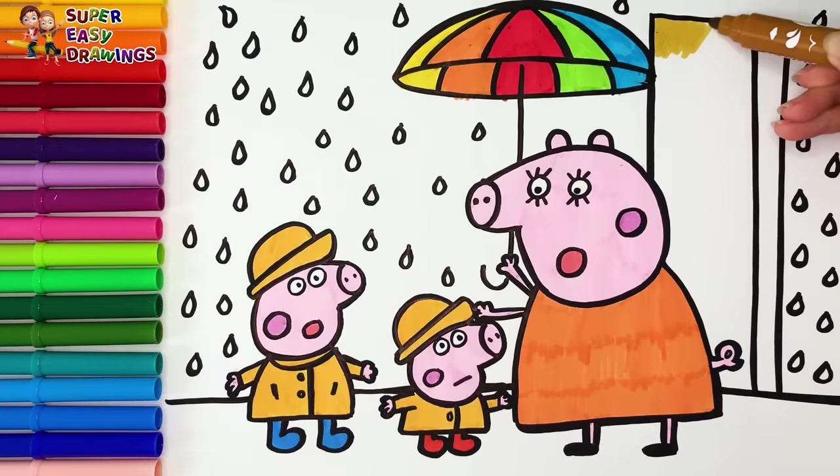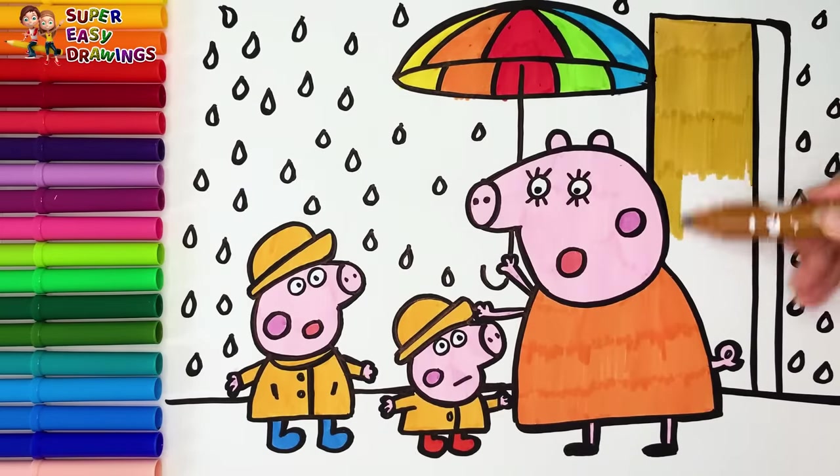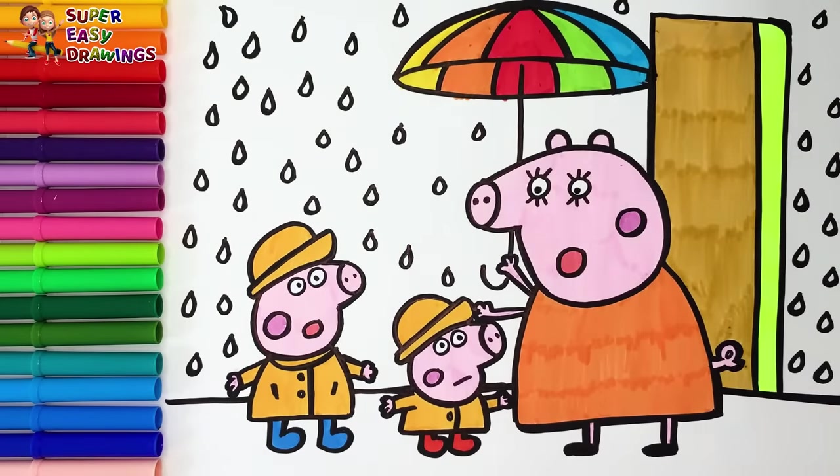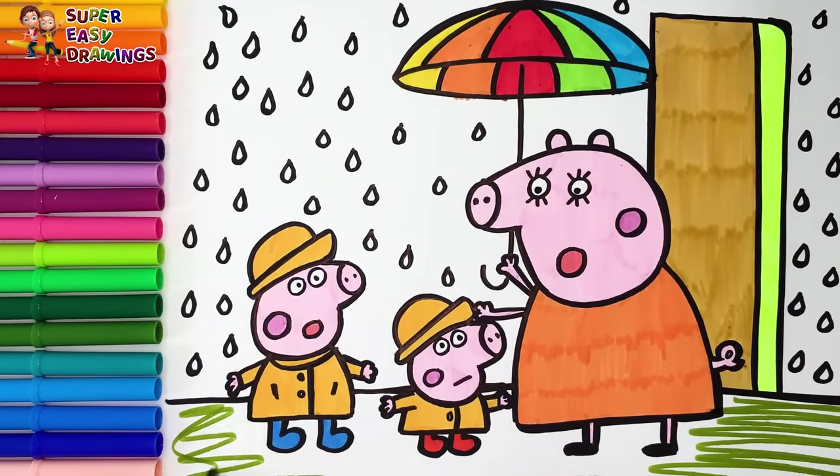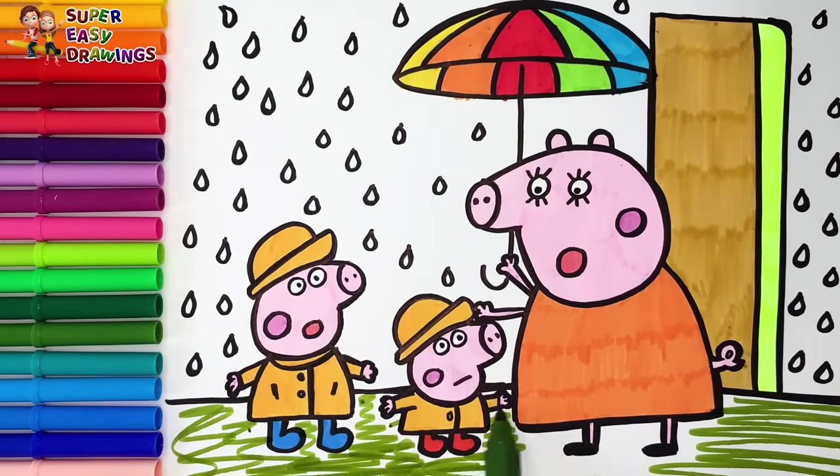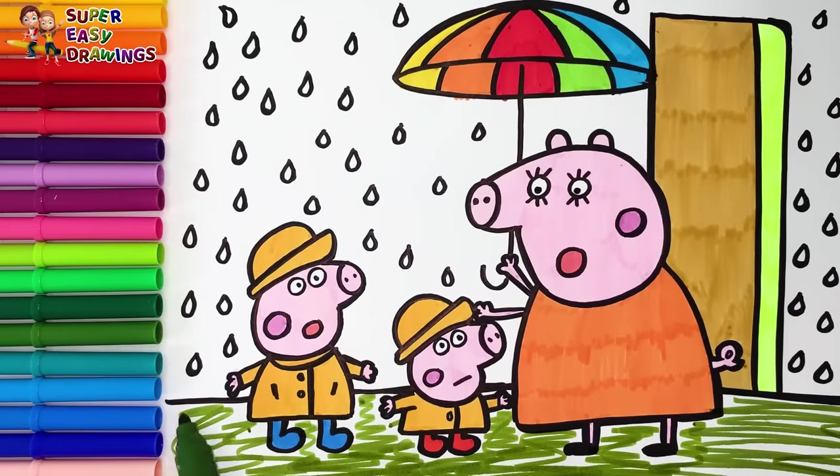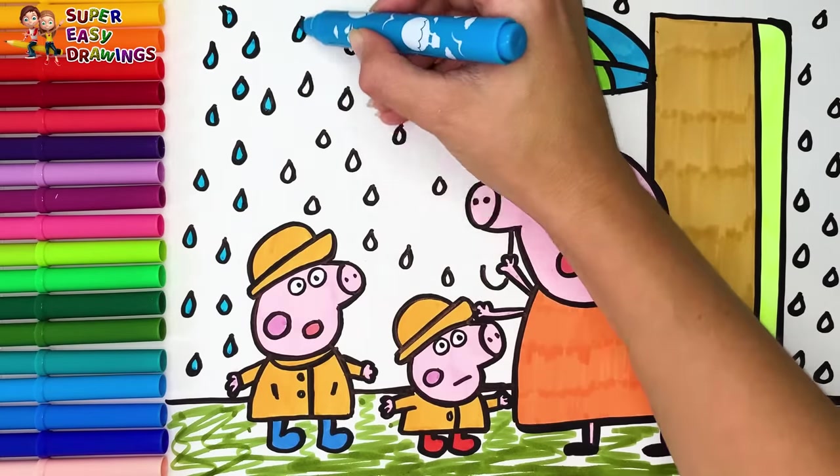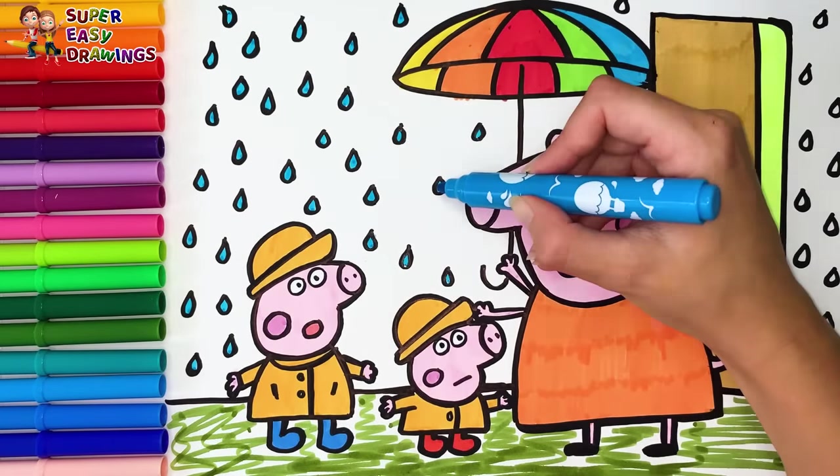I color the door with light brown and some yellow. I use green for the ground, and I finish the coloring with some blue for the raindrops.